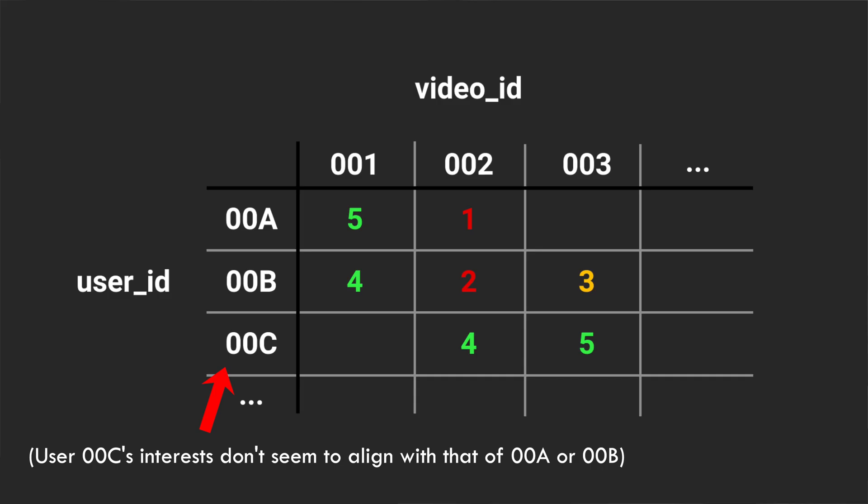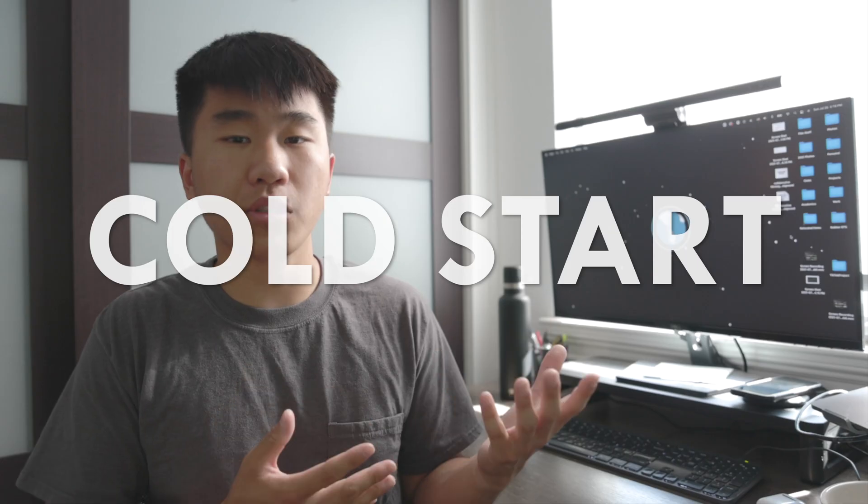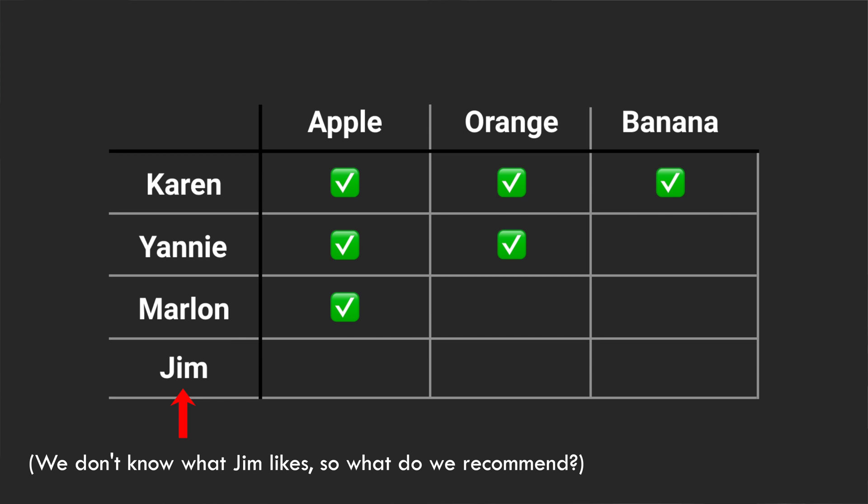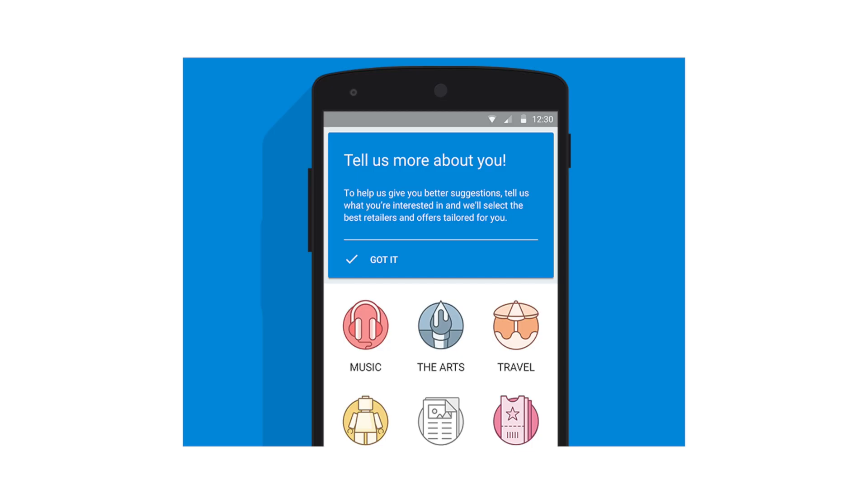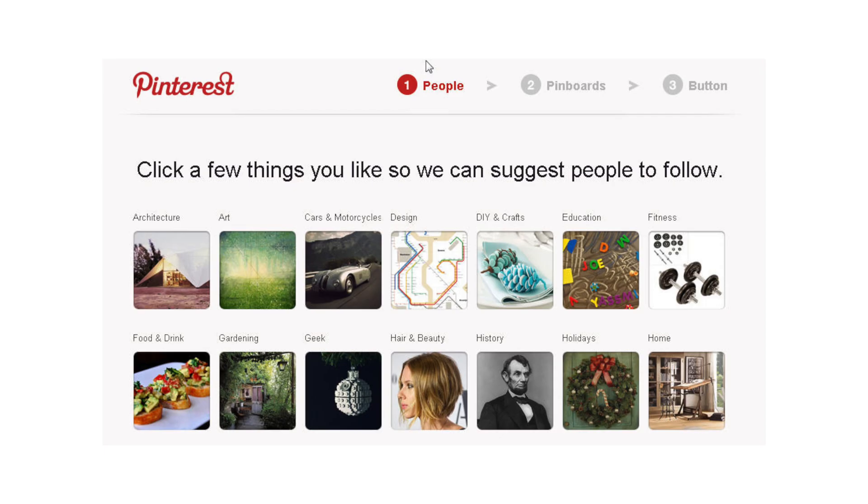Despite how good collaborative filtering sounds, there still are a lot of edge cases that it's not super great at handling. For instance, some users known as Gray Sheep might have interests that don't necessarily align with any given group of people, which makes it really hard to give them meaningful recommendations. Another issue is known as Cold Start, which arises when there isn't enough data about a new user to be able to provide an initial recommendation. A lot of apps tackle this problem by prompting users to select their interests upon signing up. The beauty of collaborative filtering is that you don't necessarily need to classify videos and users in order to make half-decent predictions — apps like TikTok are able to figure out what you're interested in without actually knowing what exactly it is you're interested in. This is why data scientists spend so much time optimizing these algorithms so that you, the user, are entertained every single time you open the app.